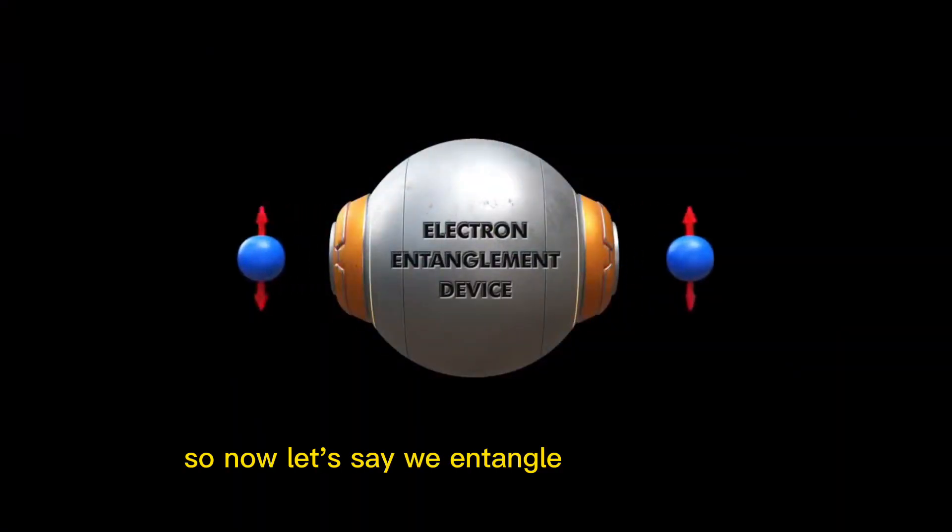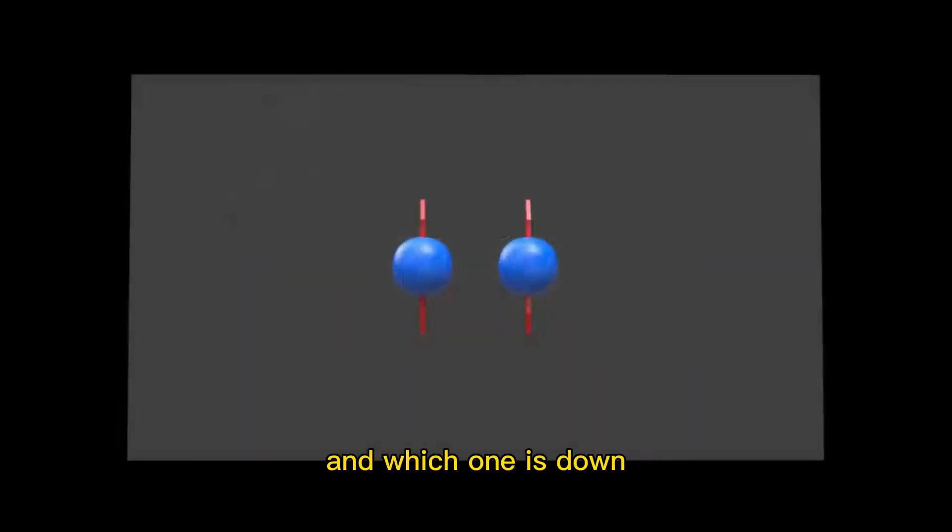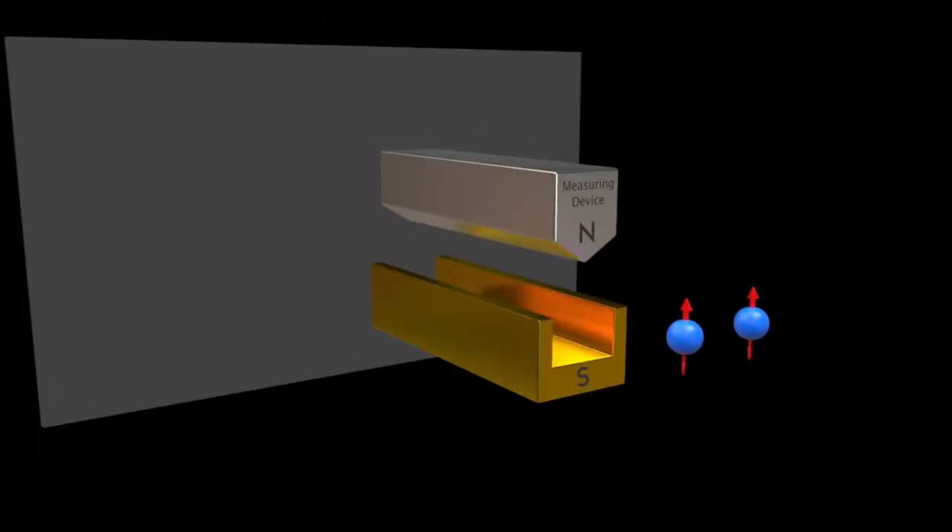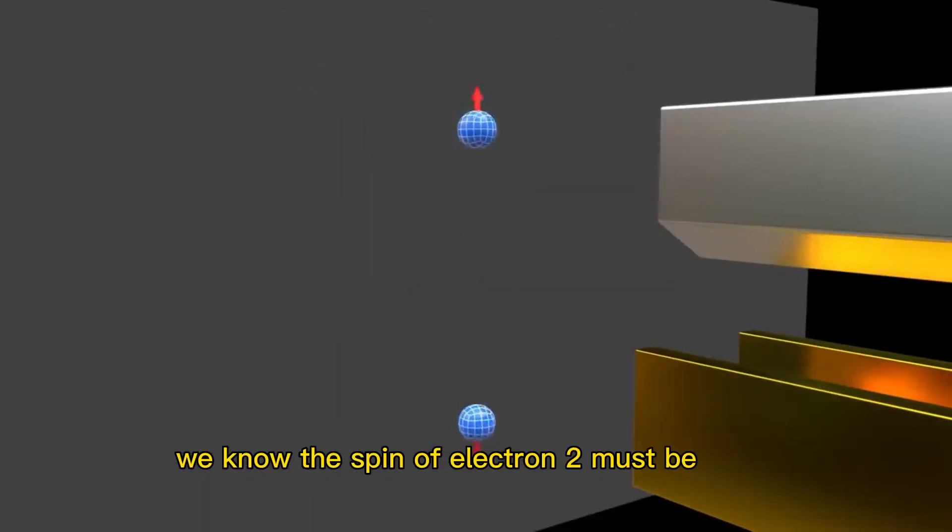So now let's say we entangle the two electrons in this way, and fire them in opposite directions. We don't know which of the pair is up, and which one is down, until we make a measurement. If we find that electron 1 is spin up, we know the spin of electron 2 must be down.